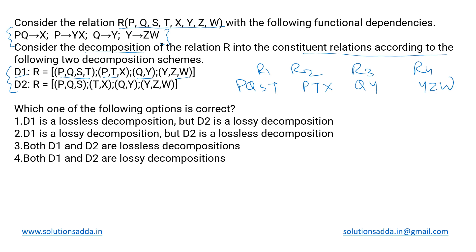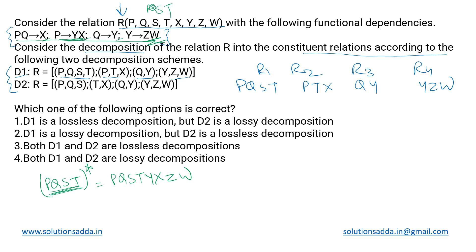To begin, let us find the candidate key for relation R. We can see that X, Y, Z, and W appear only on the right-hand side of the functional dependencies, so the leftover attributes P, Q, S, T must form the key. Their closure gives PQST, plus P derives X and Y, and Y derives Z and W — all attributes are covered. So PQST is the candidate key for relation R.